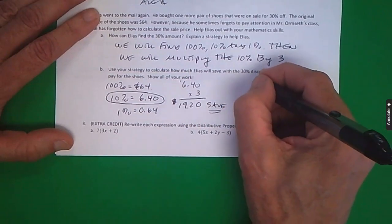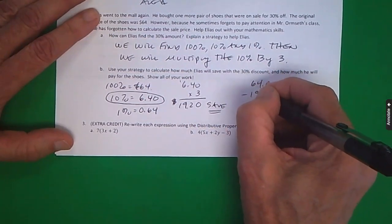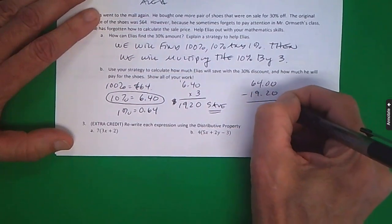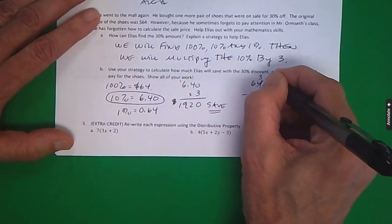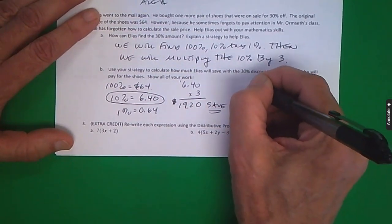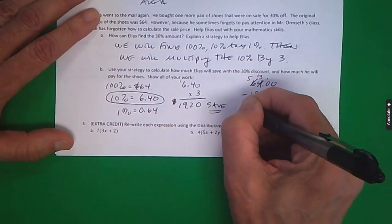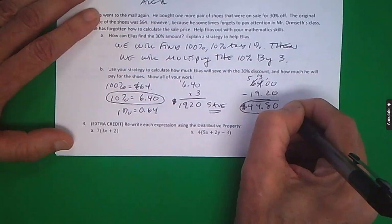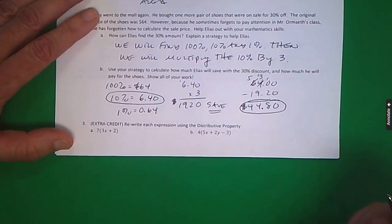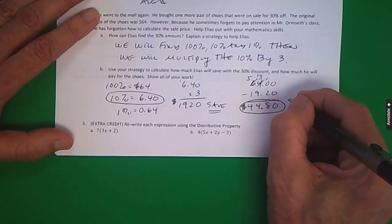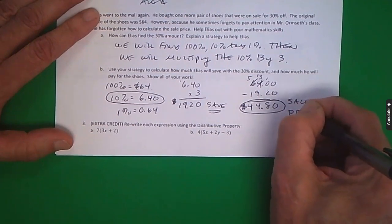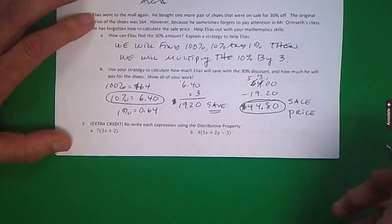So now we need to subtract that amount from $64. We'll need to do a little regrouping here, a little more regrouping. And so we can see Elias is going to have to spend $44.80, and we call that the sale price.